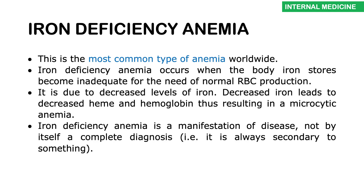Iron deficiency anemia is the most common type of anemia worldwide, which is why I wanted to start with it. It occurs when iron stores are depleted and become inadequate to sustain normal red blood cell synthesis. Decreased iron levels cause a decrease in heme synthesis and ultimately a decrease in hemoglobin, resulting in microcytic anemia. Remember, iron deficiency on its own is not a diagnosis — it must always be secondary to something. You must always identify the underlying cause: is it prolonged menses, hookworm infestation, or something else?